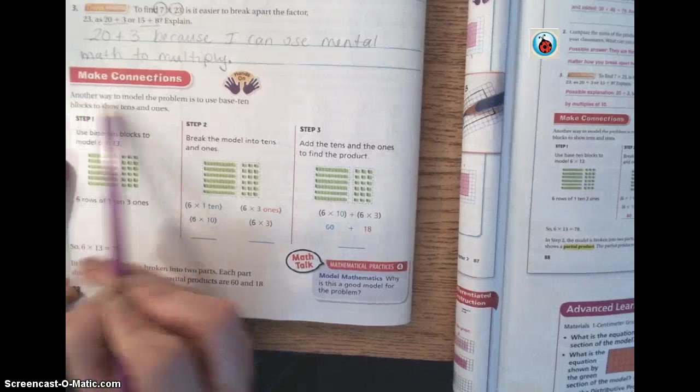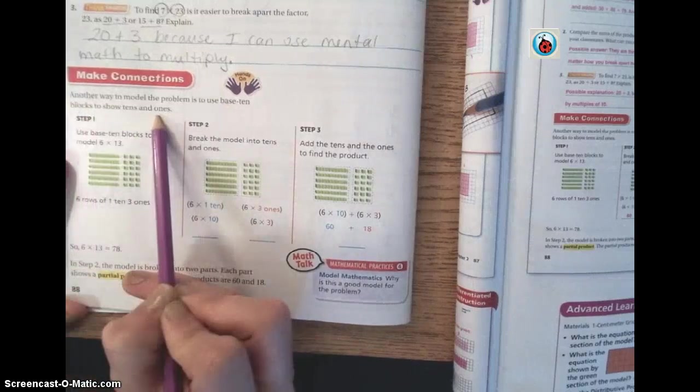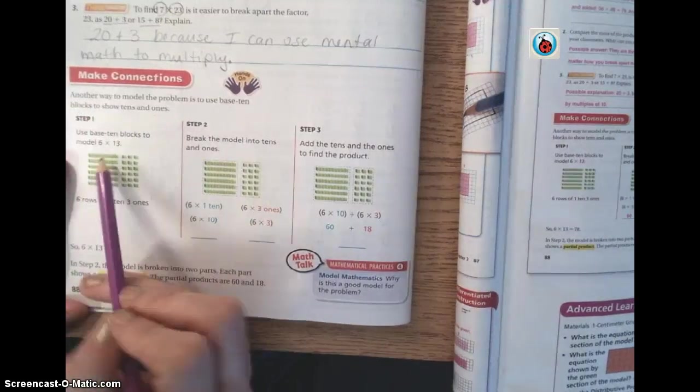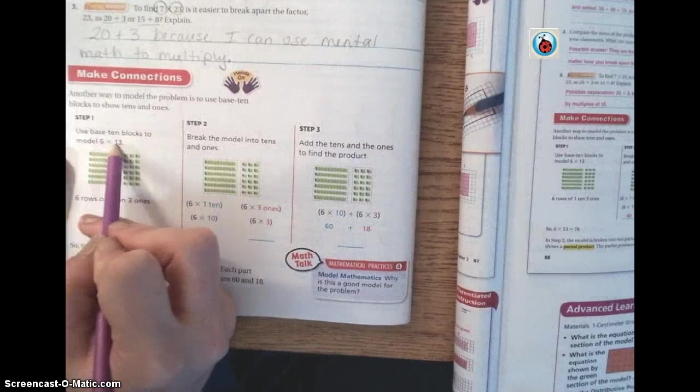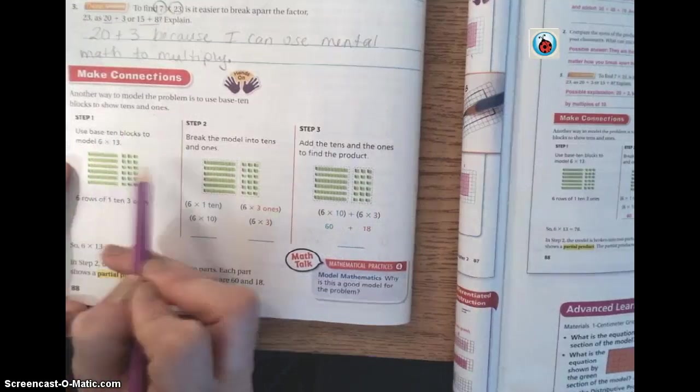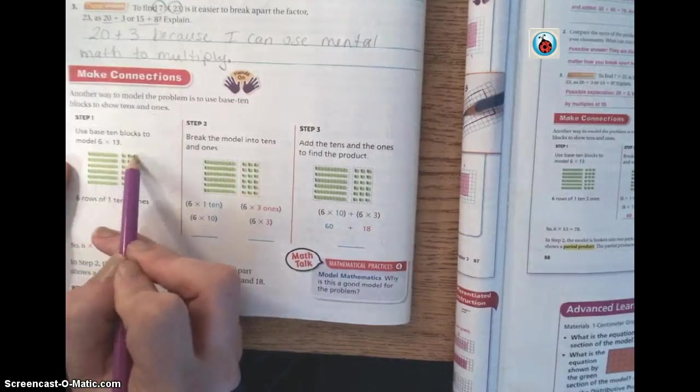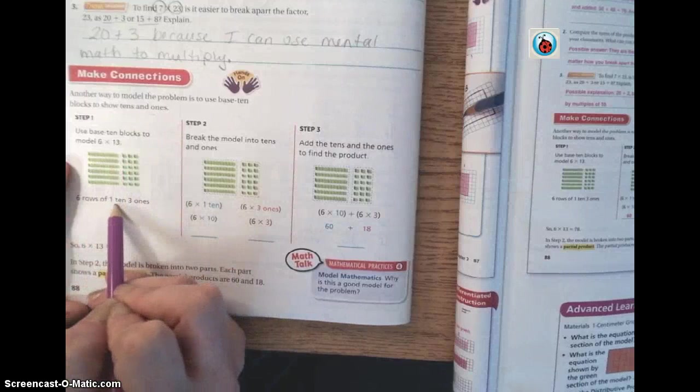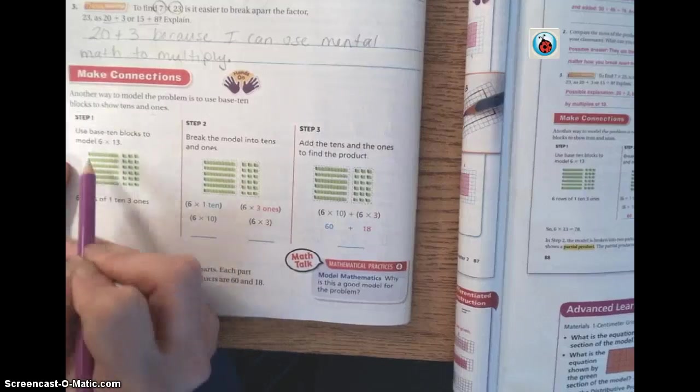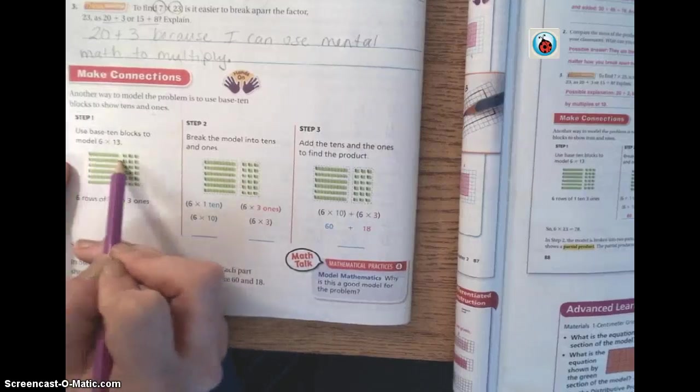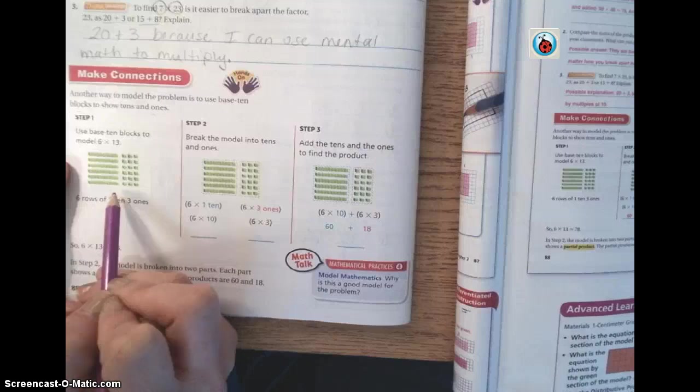Down here, make connections. Another way to model the problem is to use base 10 blocks to show tens and ones. So here we have base 10 blocks to model 6 times 13. We have 6 rows of 1, 10, and 3 ones. So 1, 10, 3 ones, 6 times.